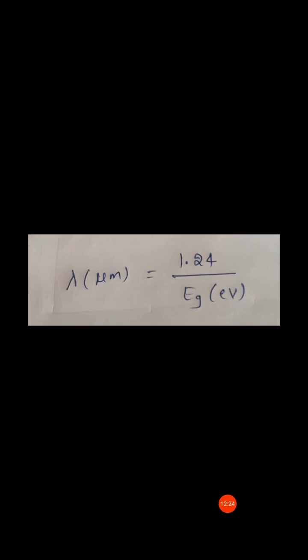The full width half maximum spectral widths of LEDs in the 800 nanometer region are around 35 nanometers. In the 300 to 600 nanometer region, the spectral widths vary from around 70 to 180 nanometers, as shown in the figure.